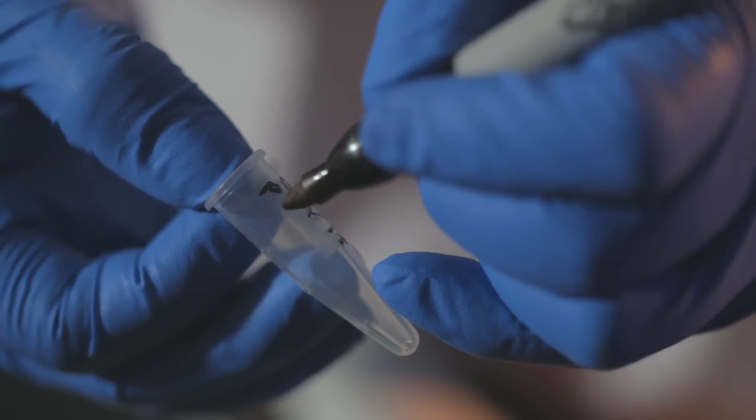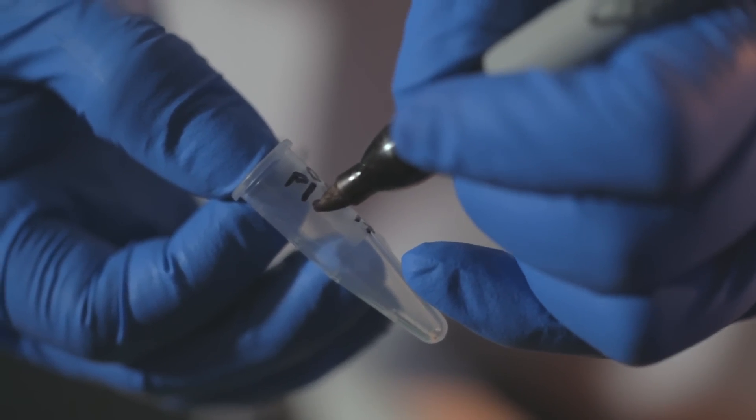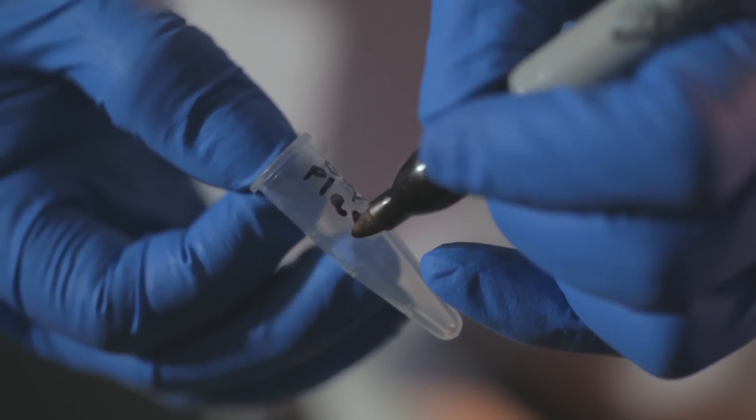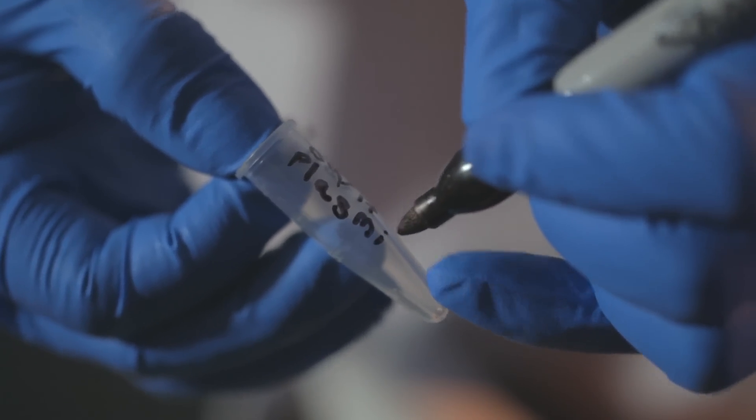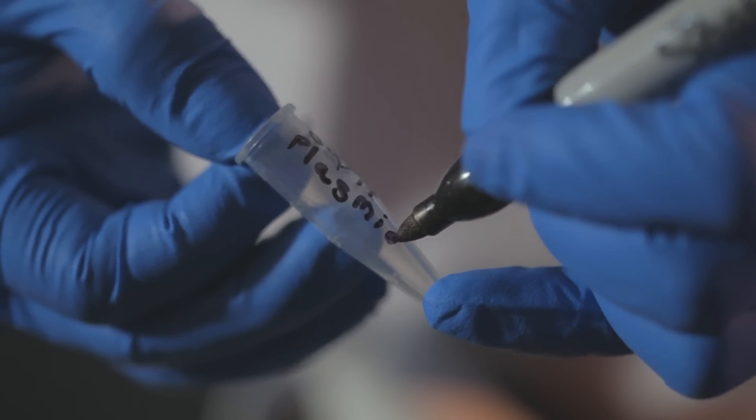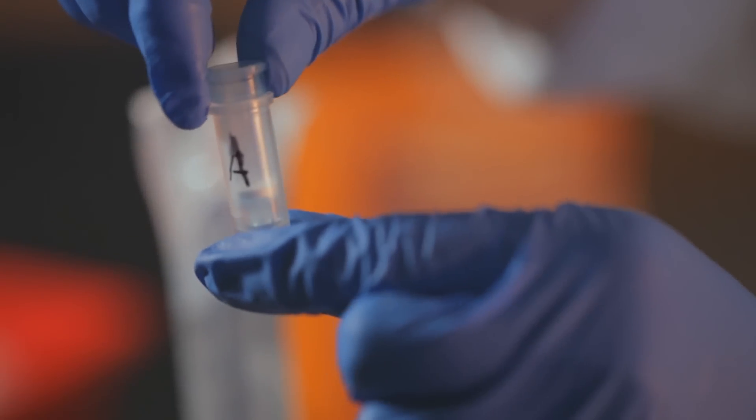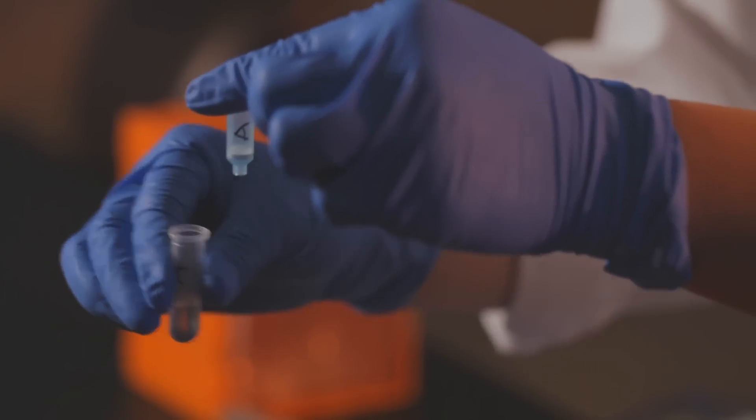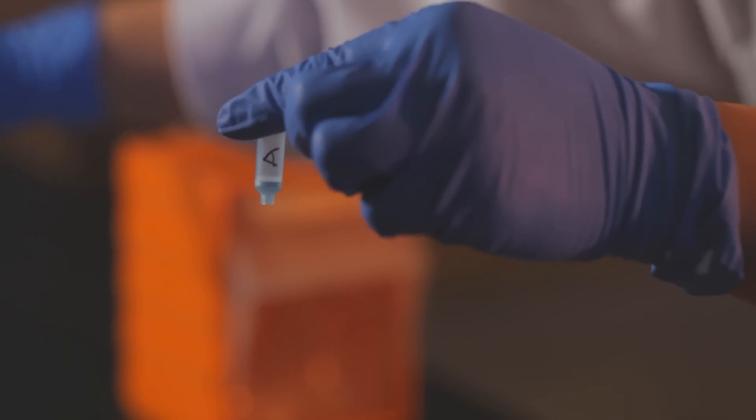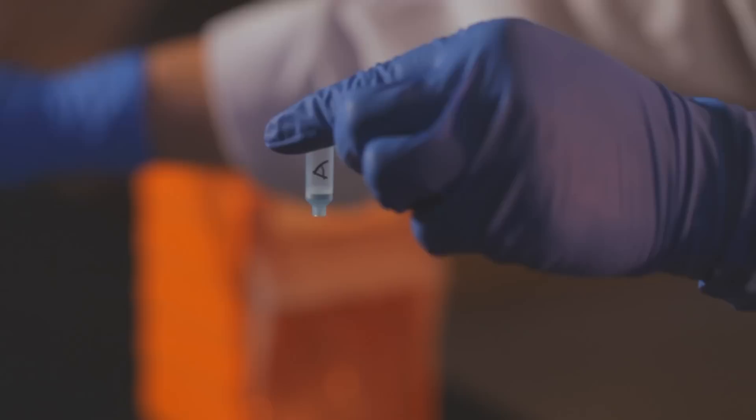During the spin, label clean 1.5 milliliter microfuge tubes to hold your final purified plasmid DNA. Be sure to include your initials and the date. Once the spin is done, remove the spin column and collecting tube from the centrifuge. Dump out the flow-through that is now in the collecting tube and place the column back in the collecting tube.